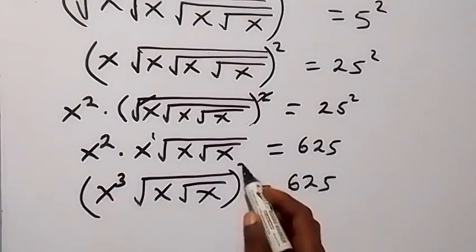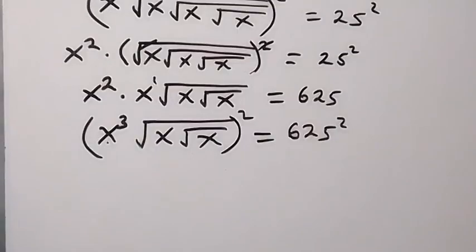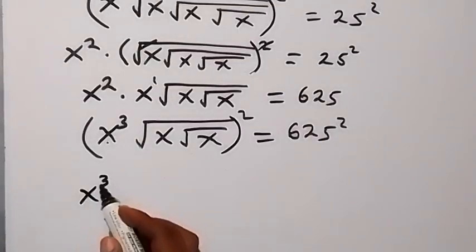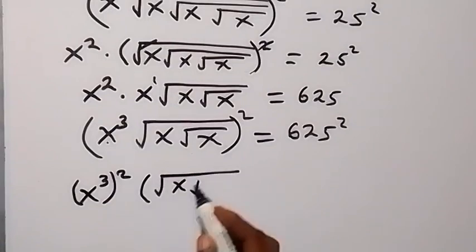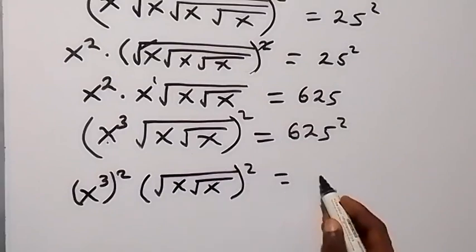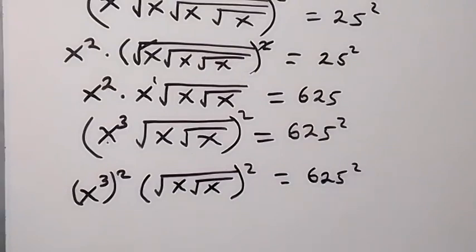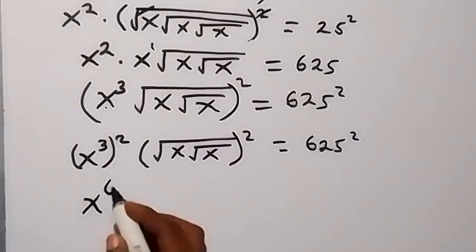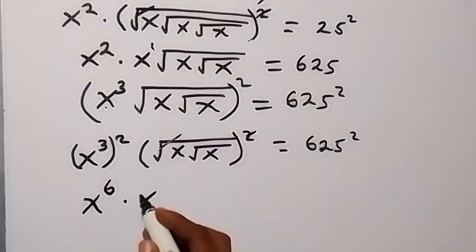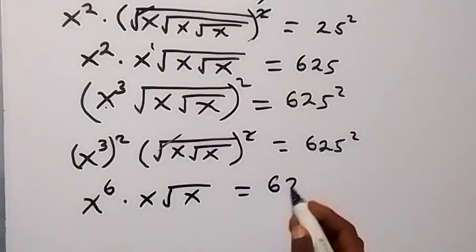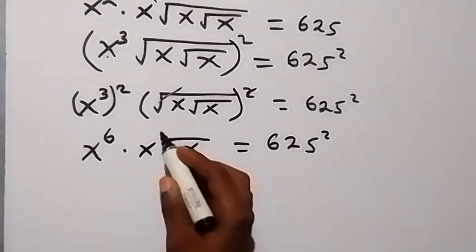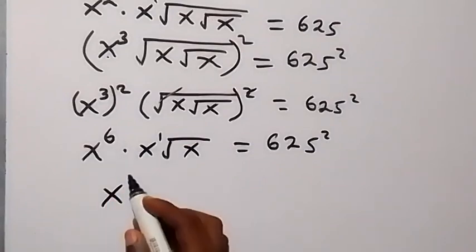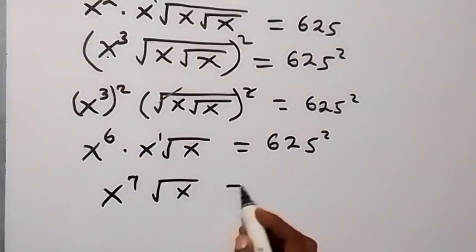Now let's square both sides again. The square will affect x raised to power 3, giving x raised to power 6. The square also cancels the square root, leaving times x times root x, which equals 625 squared. Bringing together, this is x raised to power 6 plus 1, which is x raised to power 7, times root x, equals 625 squared.